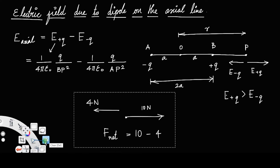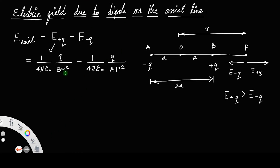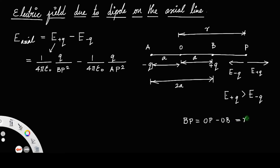What is the value of BP? BP equals OP minus OB, which is r minus a. Similarly, AP equals OP plus OA, which is r plus a. These two values can now be substituted into the expression for E_axial.